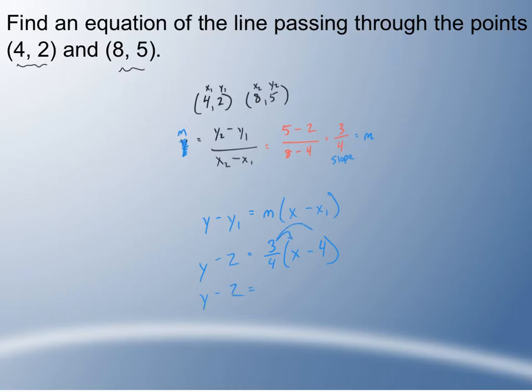I'm going to do the same thing as a previous example. Distribute the 3 fourths to both of those terms. When you distribute the 3 fourths to the x, all that happens is they go next to each other, 3 fourths times x. And when you distribute the 3 fourths to the 4, 3 fourths times 4, the 4s cancel out and it's just 3. So I'm going to put a minus 3 right there. Last step is to add 2 to both sides of my equation. Y equals 3 fourths x. Negative 3 add 2 is minus 1. And that is the answer to example 2.